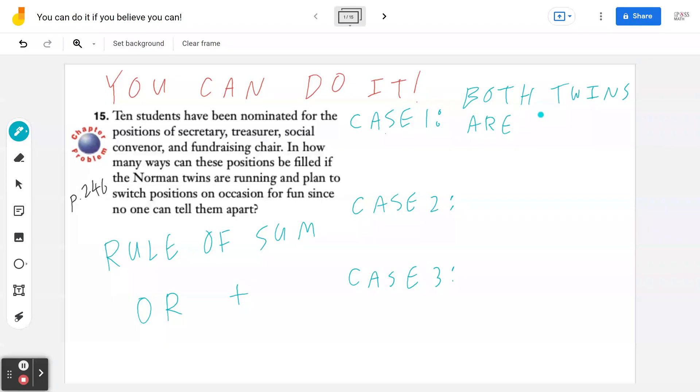I'm just writing down the cases before we deep dive into the math. If you think about the second case, only one of them, which is only one twin, will be elected. And of course, case three is where none of them, meaning neither twin, is elected.